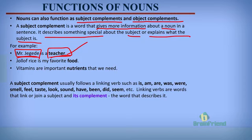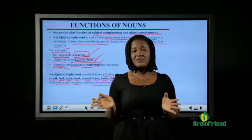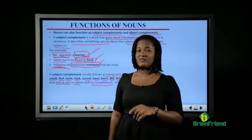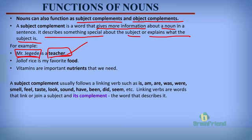A subject complement usually follows a linking verb such as is, am, are, was, were, smell, feel, taste, look, sound, have, been, did, seem. Linking verbs are words that link or join a subject and its complement. In the examples, is and are are linking verbs. Wherever you find a linking verb, you will most likely find a subject complement after it.